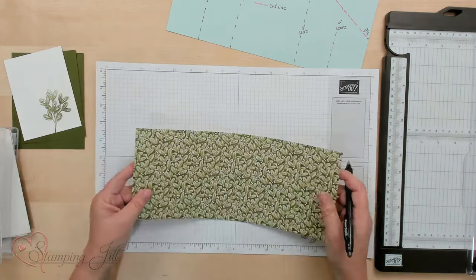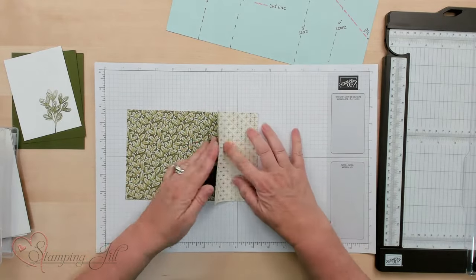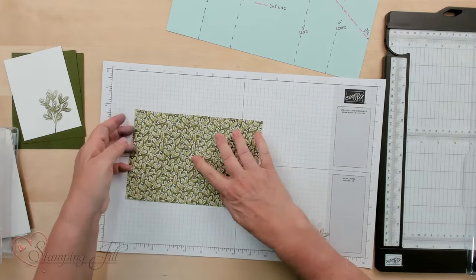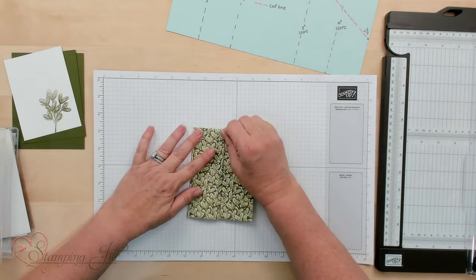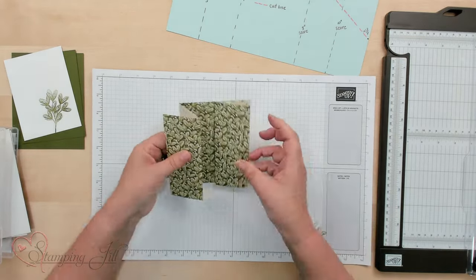I'm going to go ahead and fold these score lines into the gatefold. This is going to be the inside of the card and this will be some of the outside of the card. Right now you'll just see the one pattern.